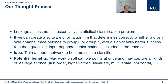We noticed that leakage assessment is essentially a statistical classification problem. If we can generate an algorithm or a machine that determines whether a leakage trace belongs to group 0 or group 1 with a better success rate than randomly guessing, then indeed input-dependent information is included in the traces. This seemed like a pretty straightforward task for a neural network. The potential benefits compared to classical methods would be that the network receives each trace in full length, making decisions on the full trace instead of one point only, and that the classifier is not limited to simple univariate first-order leakage but inherently captures all leakages that normally occur. Based on this idea, we created a new leakage assessment methodology which we called Deep Learning Leakage Assessment, in short DLLA.